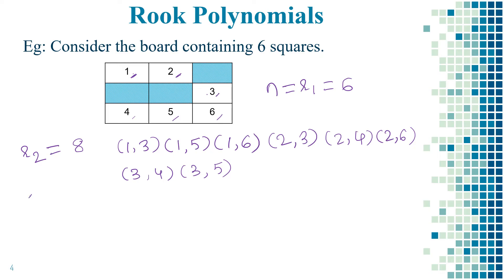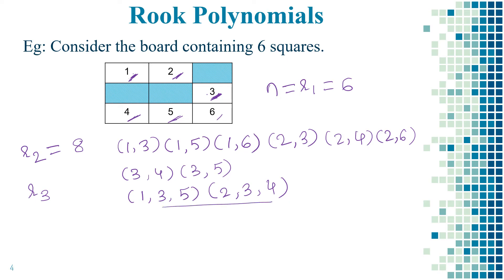Next, let us find r3, the placement of 3 pawns over the board. The first pawn can be placed at position 1; keeping in mind they should not capture each other, the second pawn at position 3, and the third pawn at position 5. So the ordered triple is (1, 3, 5). The second possibility is (2, 3, 4), such that they do not capture each other. By observation, these two are the only possibilities for the placement of 3 pawns, so r3 = 2.